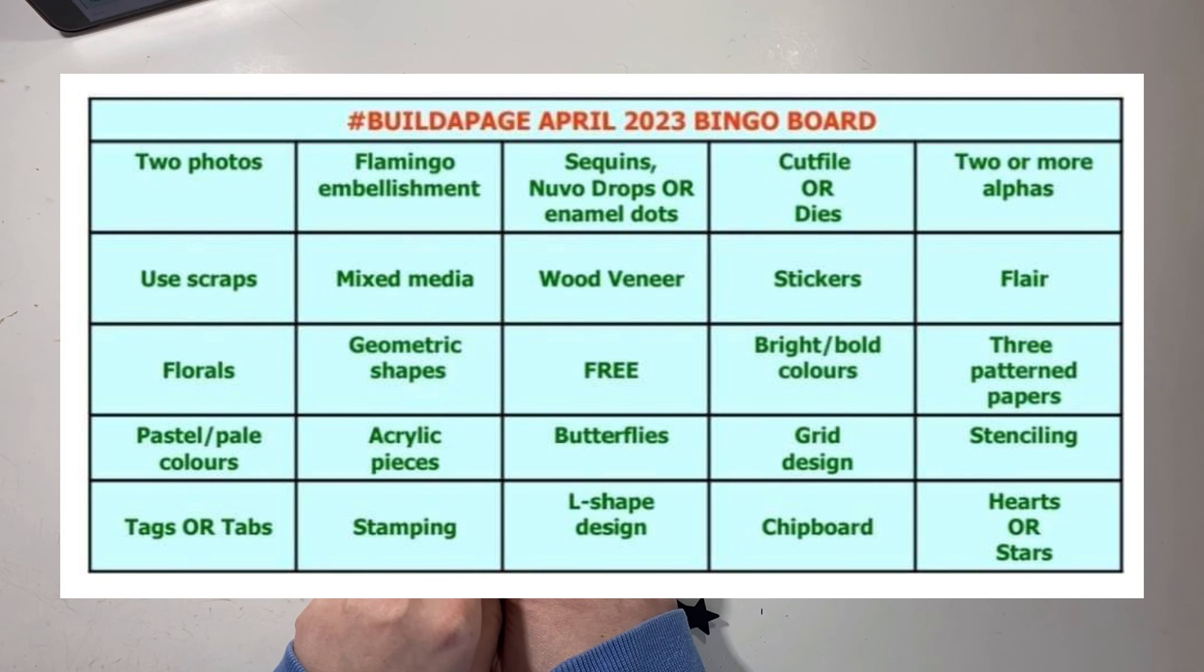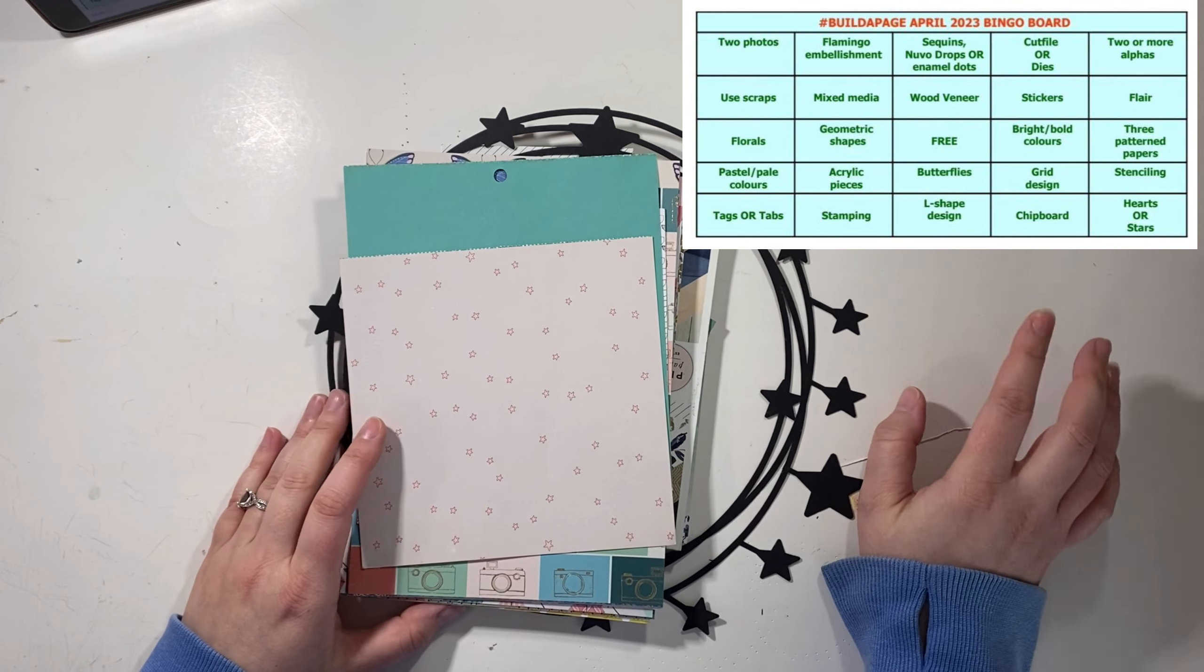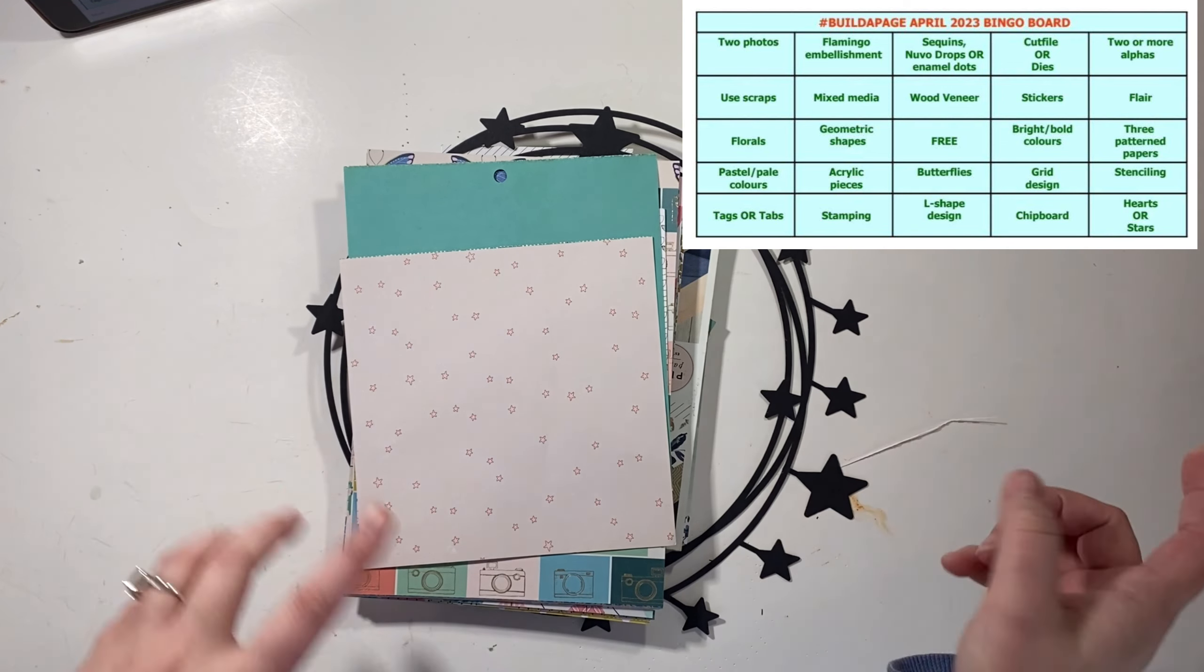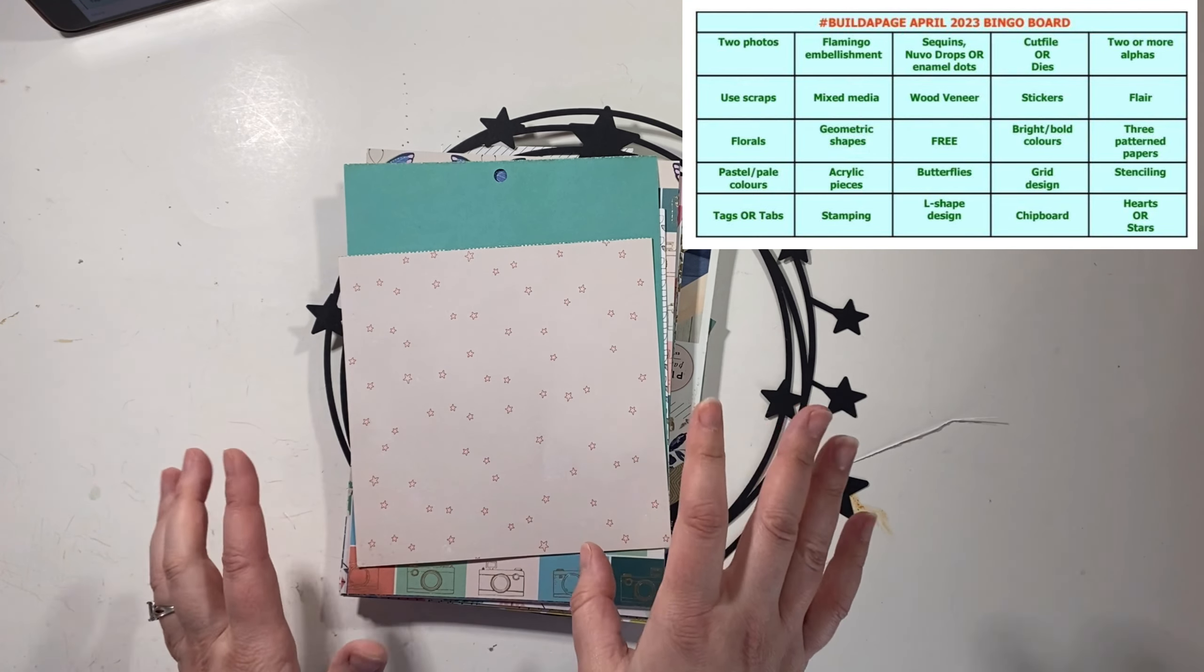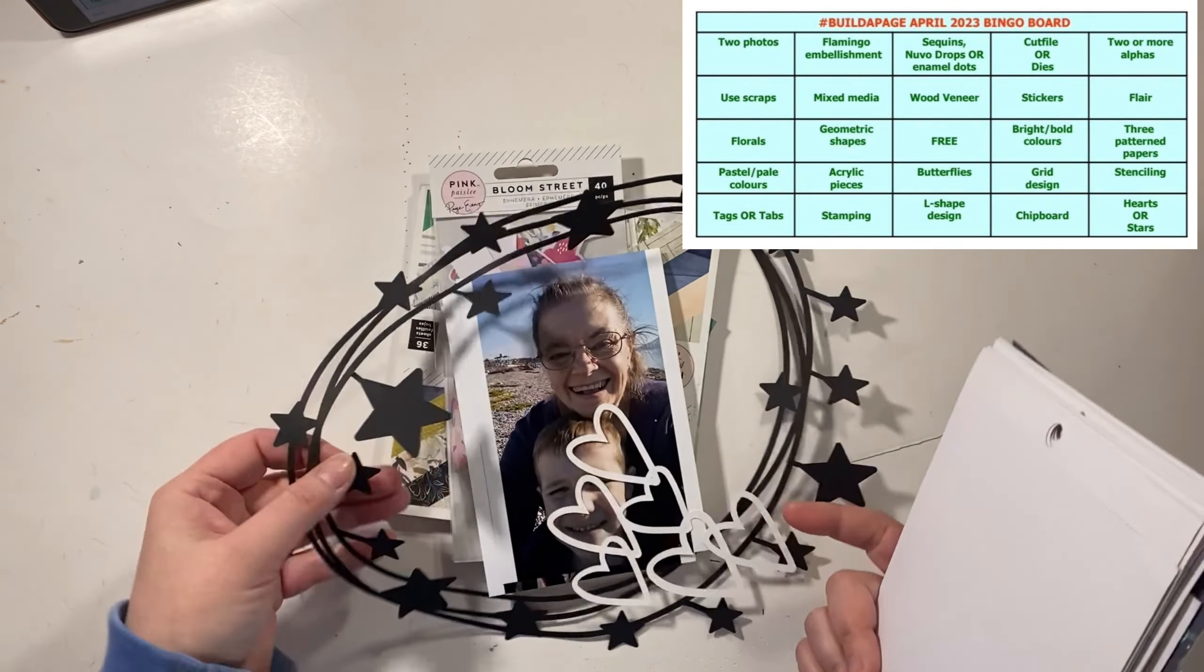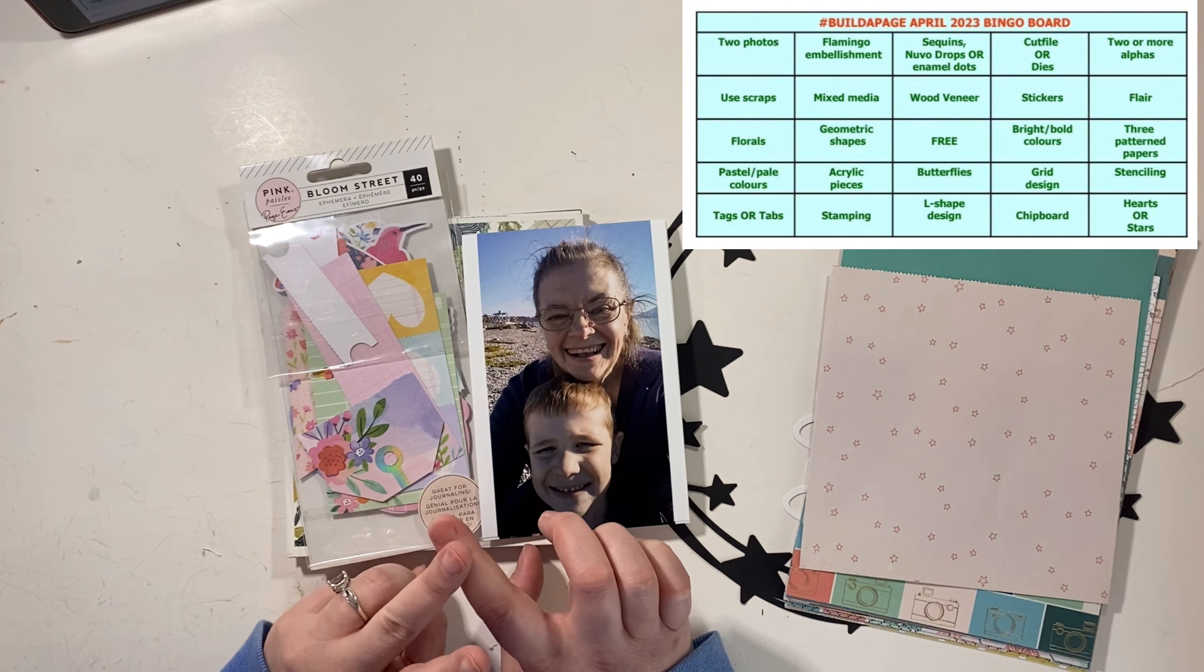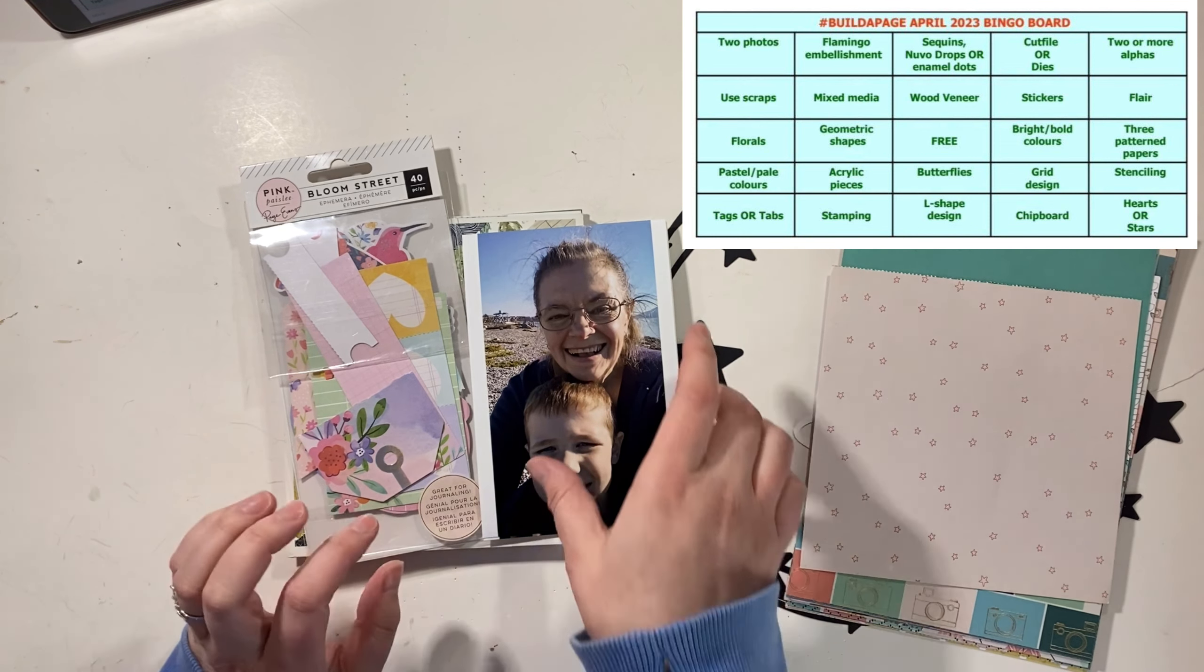I'm going down the rows, so hopefully that's popped up there so you can see it. We did the one starting with the flamingo embellishments and the one starting with the cut file in the previous video. We're going to do the other three today. I'm going to start with the one I just grabbed a bunch of stuff really, so I thought we could play.